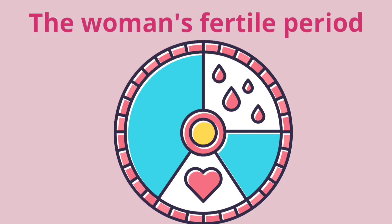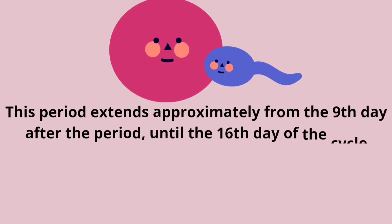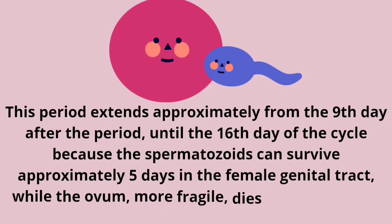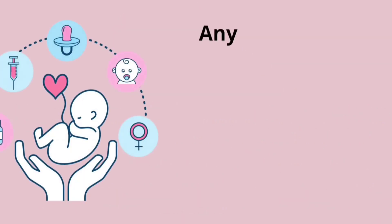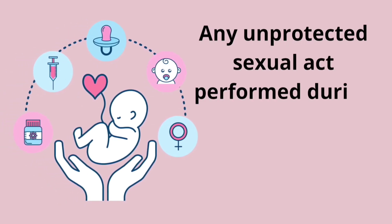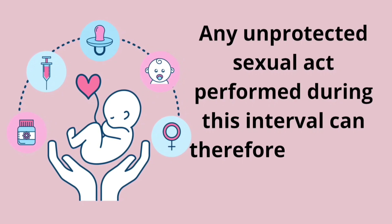The woman's fertile period extends approximately from the 9th day after the period until the 16th day of the cycle, because spermatozoids can survive approximately 5 days in the female genital tract, while the ovum dies 2 days after ovulation. Any unprotected sexual act performed during this interval can therefore lead to a pregnancy.